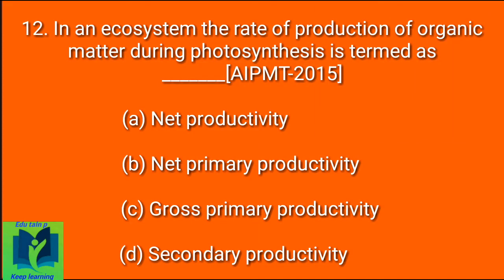In an ecosystem, the rate of production of organic matter during photosynthesis is termed as: Option A: Net productivity. Option B: Net primary productivity. Option C: Gross primary productivity. Option D: Secondary productivity.